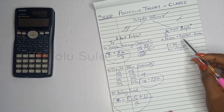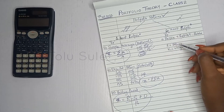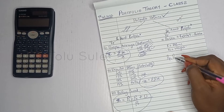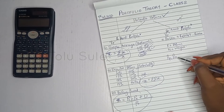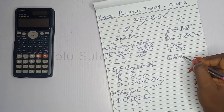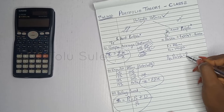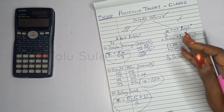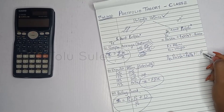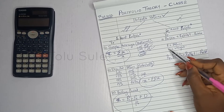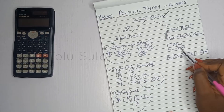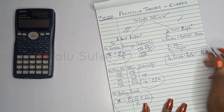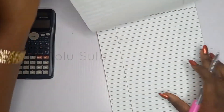For a two asset portfolio, the portfolio return is: return on asset A times the weight of asset A, plus the return on asset B times the weight of asset B, and so on up to asset n. R stands for return and W stands for weight. Let us now solve questions to understand what we are doing.